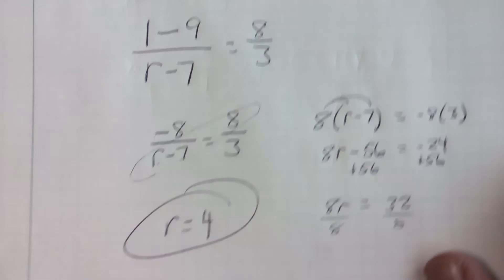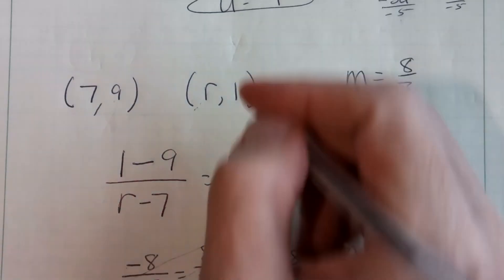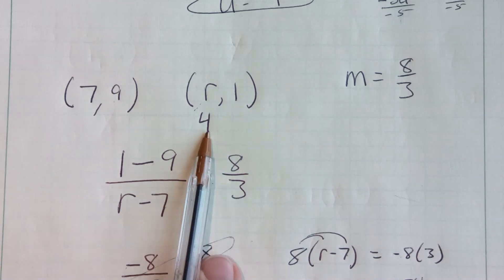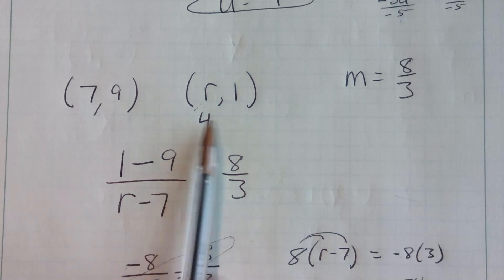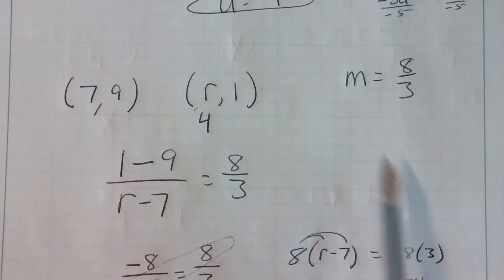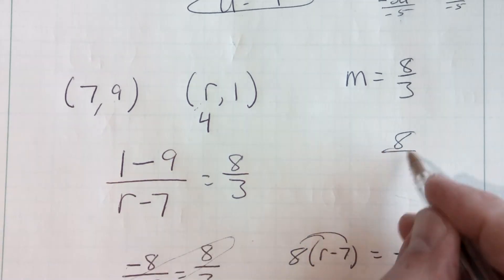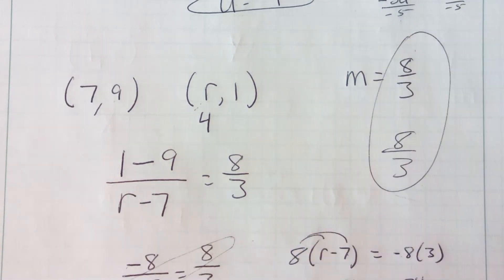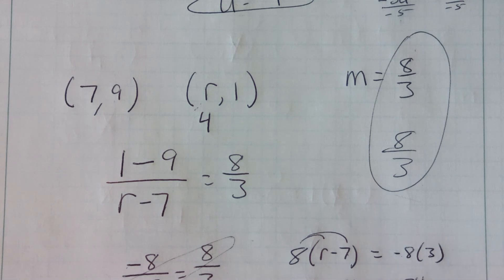Again, we could come back up here and make sure it works by plugging it in here to this r value. And again, it doesn't matter which side I choose x2. So I'm going to do it this way. I'm going to go 9 minus 1 is 8, and 7 minus 4 is 3, which is what my slope should be. So it does work. If you have questions, please bring them to class. Thank you.